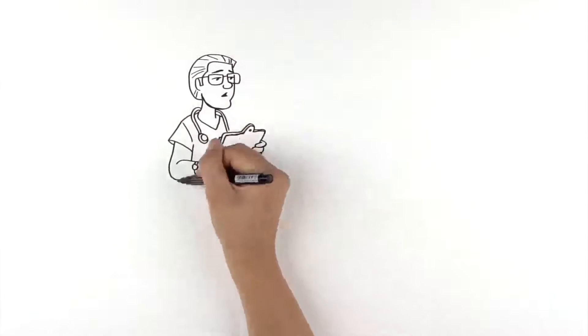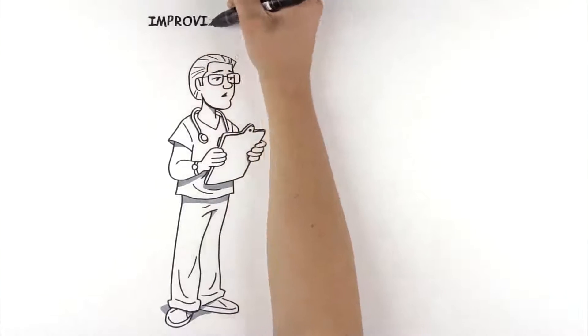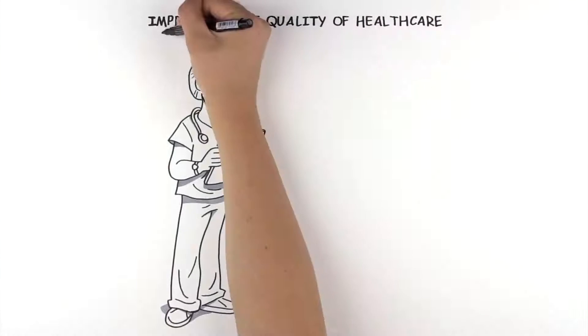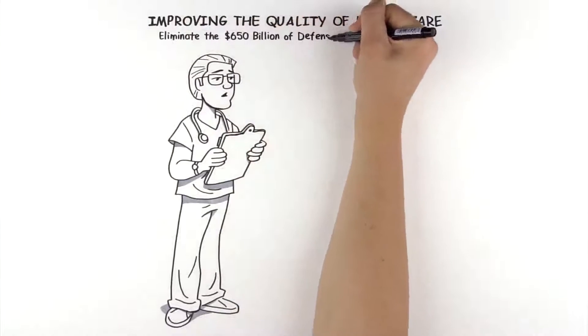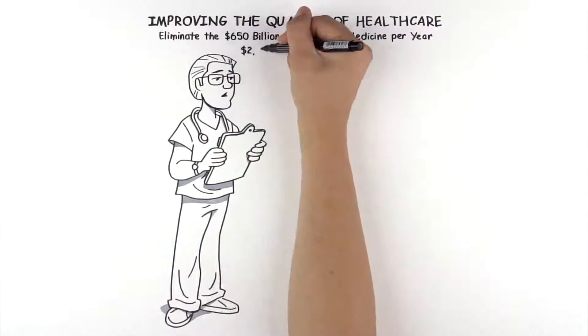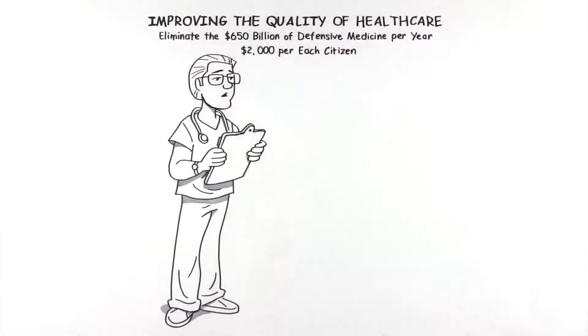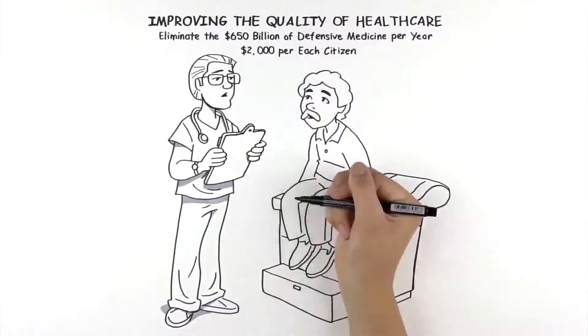so they are no longer forced to practice defensive medicine, thus improving the quality of health care and helping replenish the $650 billion of defensive medicine costs per year, which translates to $2,000 per year each citizen pays to maintain a broken tort system.